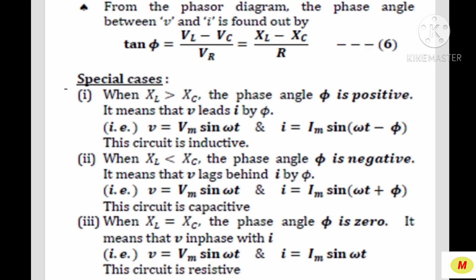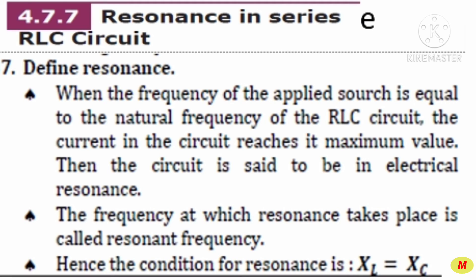Next is the definition for resonance in a series RLC circuit. When the frequency of the applied source is equal to the natural frequency of the RLC circuit, the current in the circuit reaches its maximum value. Then the circuit is said to be in electrical resonance. The frequency at which resonance takes place is called resonant frequency. Hence, the condition for resonance is XL = XC.